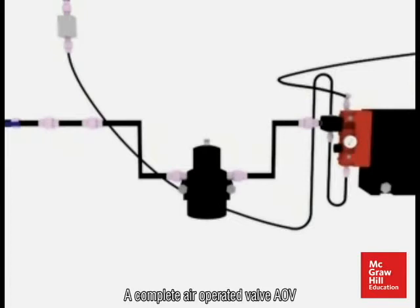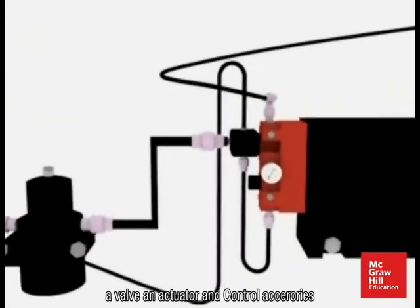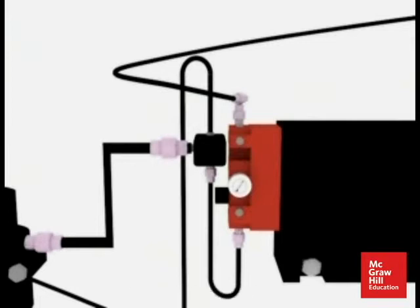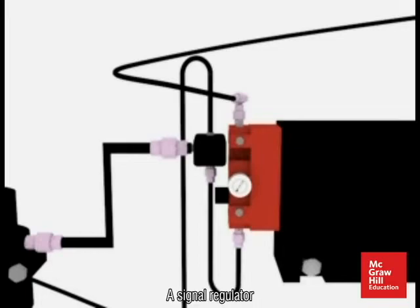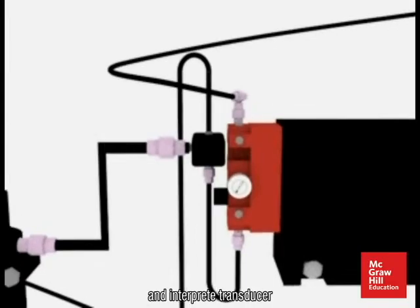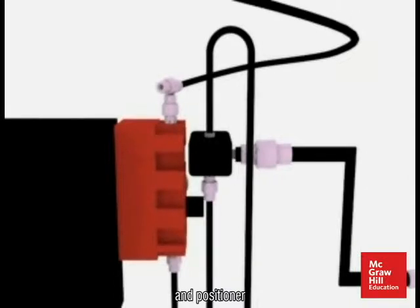A complete air operated valve (AOV) consists of the following subcomponents: a valve, an actuator, and control accessories. In this example, the control accessories are a supply regulator, a signal regulator, an I-to-P transducer, and a positioner.